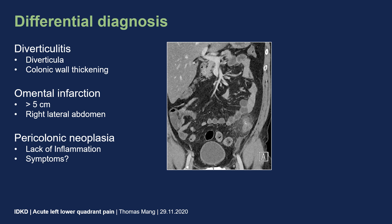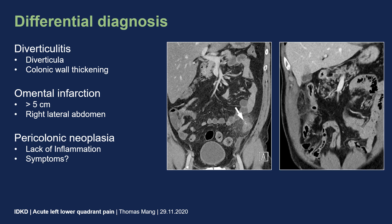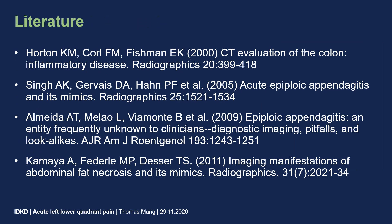Important differential diagnoses include acute diverticulitis and omental infarction. Acute diverticulitis can be recognized by the presence of diverticula and inflammatory wall thickening within the affected colonic segment. Omental infarction may have a quite similar appearance, but the lesions are typically larger, with a size of 5 cm or more, and are frequently located in the right lateral abdomen. Neoplastic disease such as liposarcoma should also be considered.